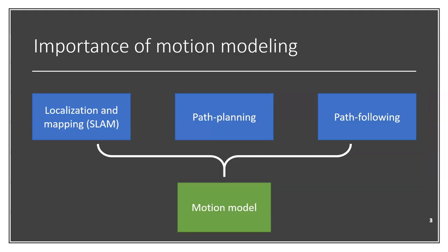This article focuses mainly on motion modeling. Why is this important for autonomous navigation? If we take a look at the state-of-the-art approaches for three of the main components of the autonomous navigation pipeline, namely localization and mapping, path planning, and path following, we can see that each of them use a motion model to a certain extent.